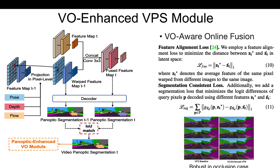In the VO Enhanced VPS module, we improve segmentation accuracy by fusing the panoptic segmentation result of the current frame on the fly to adjacent frames, using geometric information such as camera pose, depth, and optical flow obtained from the VO module. We also use feature alignment loss and segmentation consistent loss to train the online fusion module.